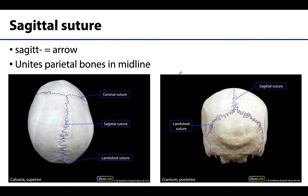Next you have the sagittal suture. The sagittal suture is going to typically run right down the midline — sometimes off by a little bit — but for the most part running down the midline between the paired parietal bones. It is named after the fact that during the early juvenile period this area is going to be a fontanelle, or an area where growth is still occurring, so it would look more like an arrow. That's where the sagittal suture gets its name.